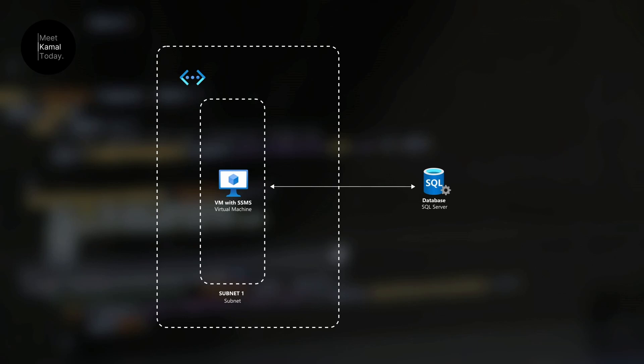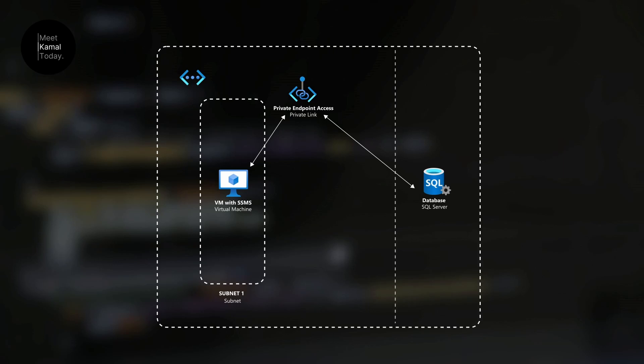To get a solid understanding we are going to create this demo. I will be deploying a SQL server database and a virtual network, and inside of that virtual network there will be a subnet, and inside of that subnet I'm deploying a virtual machine and will be installing SSMS. After that I'm going to show you how to connect from that virtual machine to the database server with the public endpoint, then remove that public access and create a private endpoint — showing how you can access the same database server with a private IP address. Since we have removed public access, it will be something like sitting within the same virtual network.